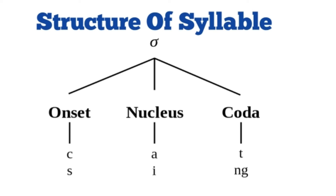The same is the case with 'sing.' You can see S is the onset, I is the nucleus, and NG is the coda.